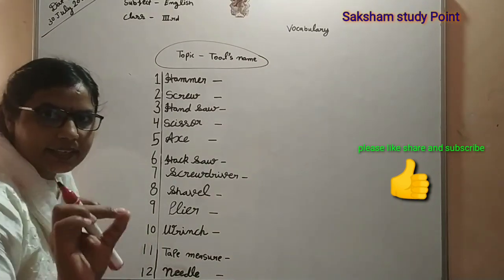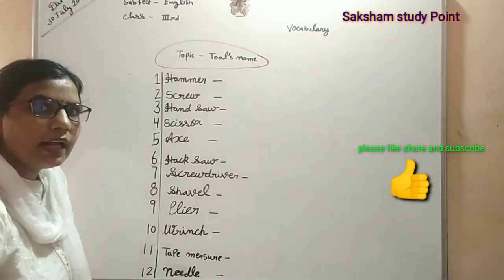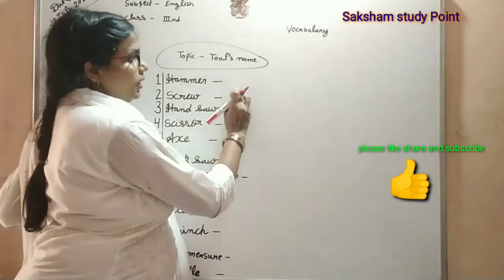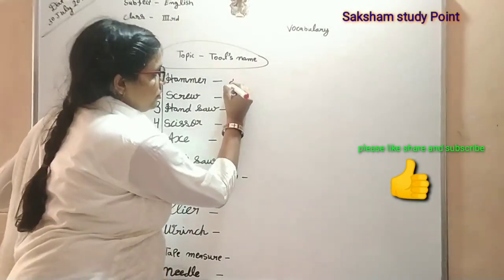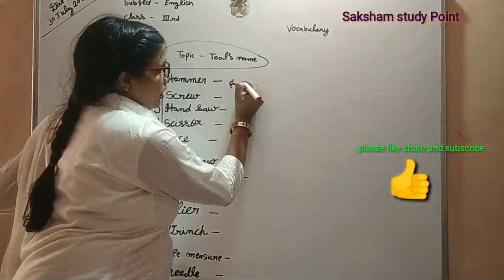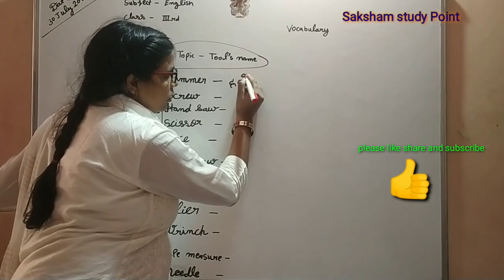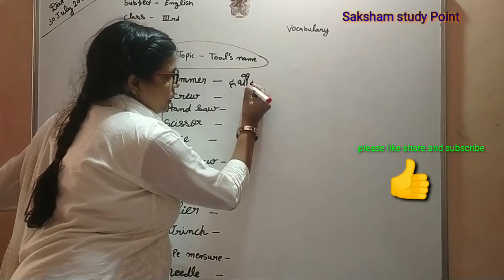H-A-M-M-E-R, hammer. Hammer means hota hai — hathoda. Kya hota hai? Hathoda.